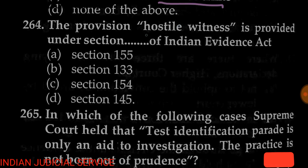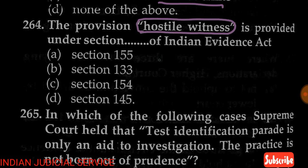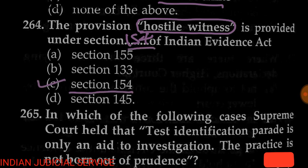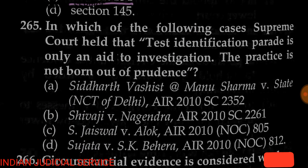Question number 264: The provision for hostile witness is provided under which section? Options are Section 155, Section 133, Section 154, and Section 145. The answer is option C — Section 154 of the Indian Evidence Act provides the provision for hostile witnesses.